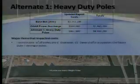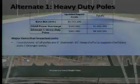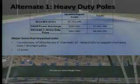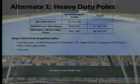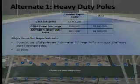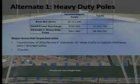The base bid is about $3.1 million. About $580,000 is what OG&E is asking this project and the city to pay to extend their infrastructure, bringing the total base bid to just shy of $3.7 million. We are aware it is a little over budget, and that led to some of the alternates.